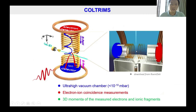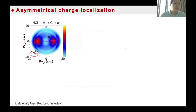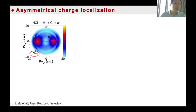Our experiment was performed using COLTRIMS. Briefly, the produced ions and electrons are accelerated by an electric field and detected by two MCP detectors. The three-dimensional momenta of electrons and ionic fragments are reconstructed from time-of-flight and positions. Showing our results: this is the momentum distribution of ionic fragments in the polarization plane. The momentum in the y-direction is mainly attributed to molecular bond breaking, while any shift along the z-direction is the signature of momentum acquired from the strong field, where the charge information is encoded.